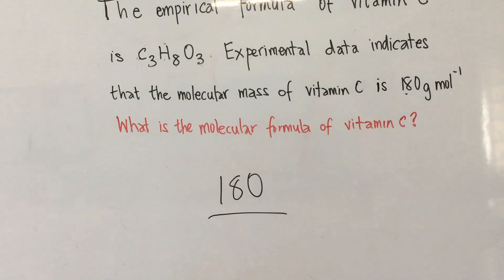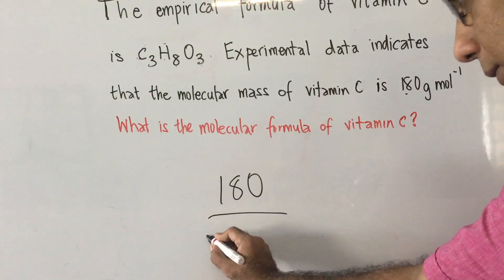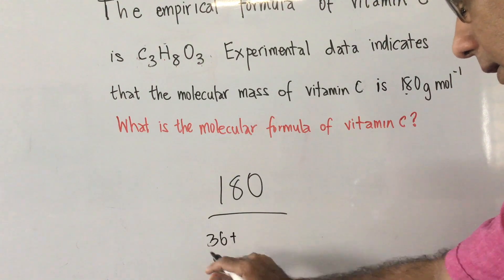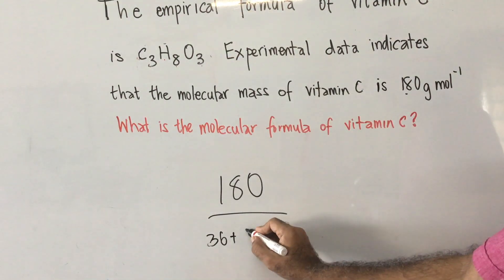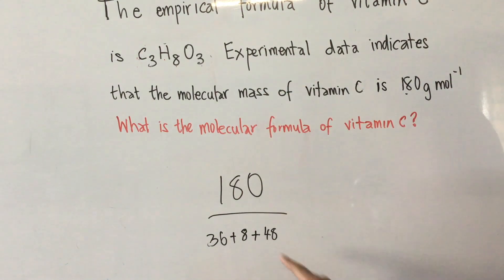All you need to do then is to divide 180 by the empirical formula mass, which is C3, which is 36, plus H, which is 1, multiplied by 8, plus O, which is 16, multiplied by 3. That's 48. So, the total here is 92.